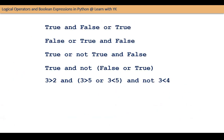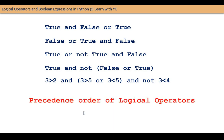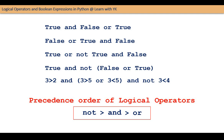When multiple logical operators are used in an expression, we also have to consider the precedence order of logical operators to evaluate the expression. The precedence order is: NOT has higher priority than AND, and AND has higher priority than OR.